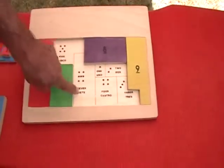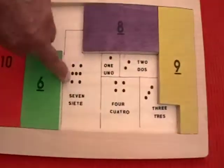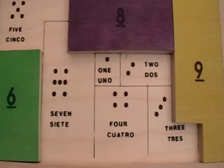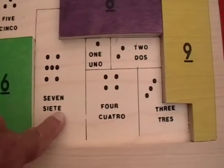Under each number is the word and the corresponding number of dots, as well as Spanish, just in case.